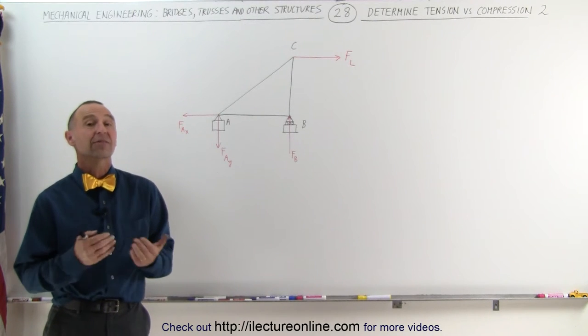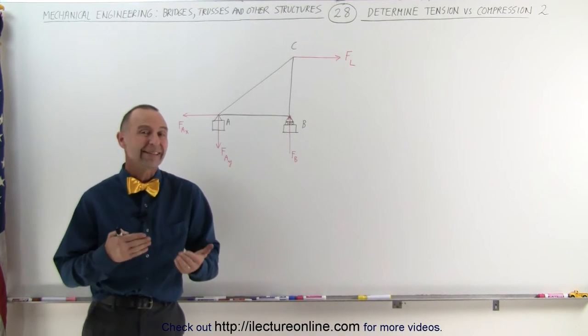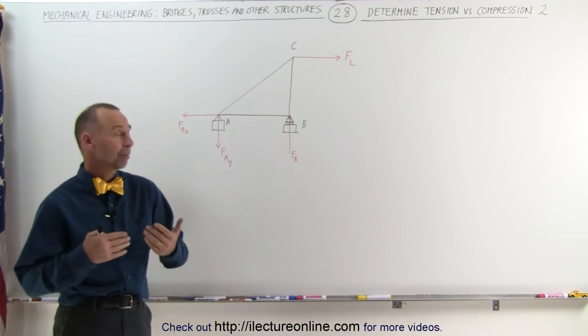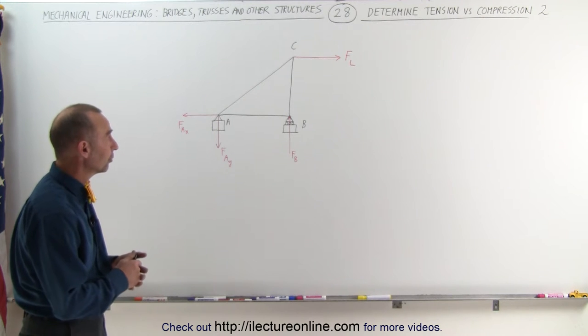Welcome to ElectronLine, and here's our next example of how to determine the tension and compression in the various members of a structure. It's a fairly simplistic structure with only three members, a couple support points.